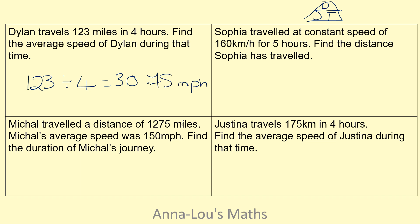Sophia travels at a constant speed of 160 kilometers per hour for five hours — find the distance. We're looking for distance, so distance is speed multiplied by time: 160 multiplied by five, which means Sophia has traveled 800 kilometers.